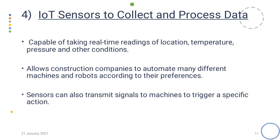Our fourth example is IoT sensors to collect and process data. Sensors are the key devices that make automation possible. They are capable of taking real-time readings of location, temperature, pressure and other conditions, and allow construction companies to automate many different machines and robots according to their preferences. Sensors can also transmit signals to machines to trigger a specific action. For example, automation is typically achieved in welding and fabrication machines through the use of sensors, which collect important environmental data that can be used to trigger a relevant action in the welding machine.